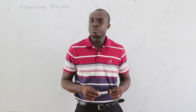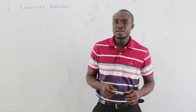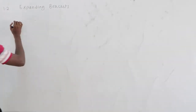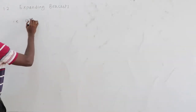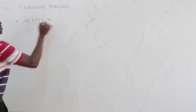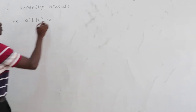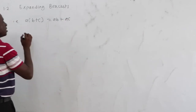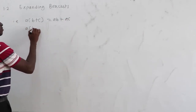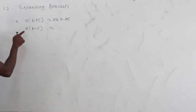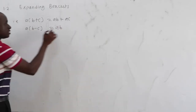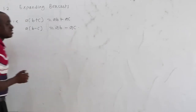Our next subtopic is expanding brackets, where the distributive property is used. If we have a times b plus c, then a multiplies b first giving ab, then a multiplies c giving ac. Similarly, a times b minus c gives ab minus ac.